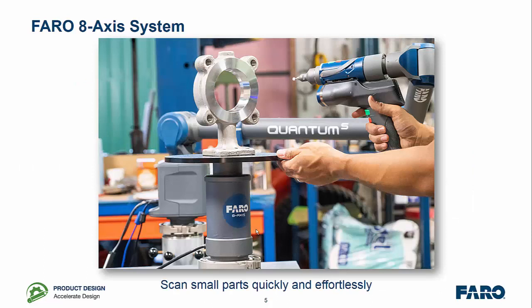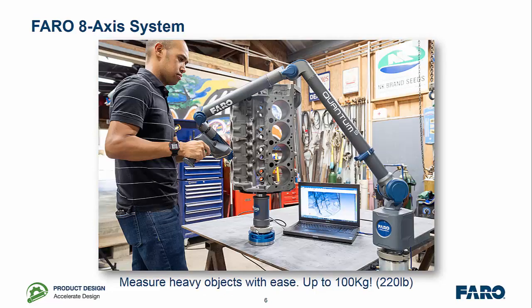The system itself helps you scan smaller parts quickly and effortlessly by being able to rotate them and not rotate the arm. For heavier objects up to 100kg it makes it easier to access them where we might not be able to reach around the artefact in order to scan. We can simply turn the turntable and continue scanning.